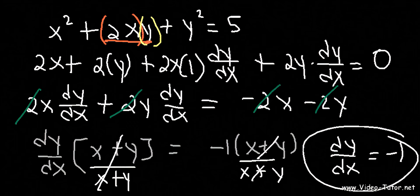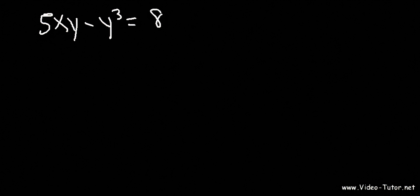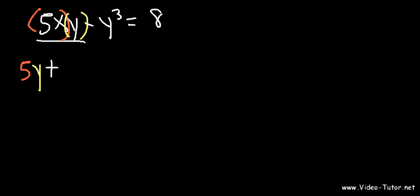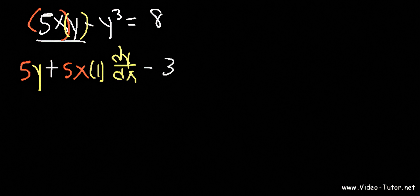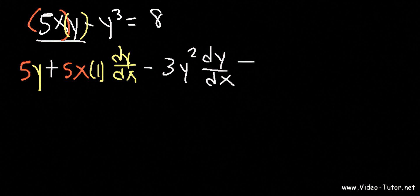Let's try another problem for practice. Let's say if you have 5xy minus y to the third is equal to 8. Feel free to pause the video and give this problem a shot. So let's use the product rule: the first part is 5x, the second part is y. The derivative of 5x is 5 times y, plus 5x times the derivative of y, which is 1 times dy/dx. The derivative of y to the third is 3y squared dy/dx. And the derivative of a constant is 0.